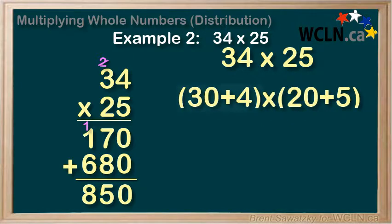34 becomes 30 plus 4. 25 becomes 20 plus 5. And again, we go to the distribution law. In this case, the distribution law tells us that we need to multiply each item in the first set of brackets with each item in the second set.